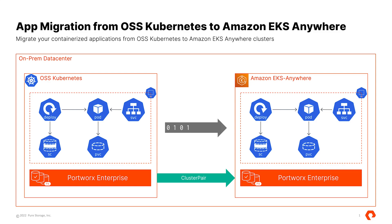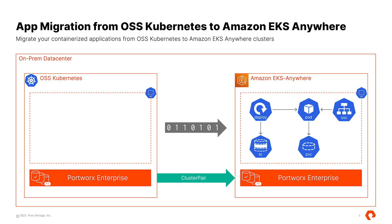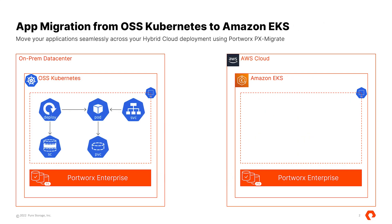As the second scenario for this demo, we look at a hybrid cloud application migration topology where we still have the vanilla or open source Kubernetes cluster running on-prem, but in this case our destination cluster is an Amazon EKS cluster running in US East 1. We follow a similar workflow to set up this application migration topology.